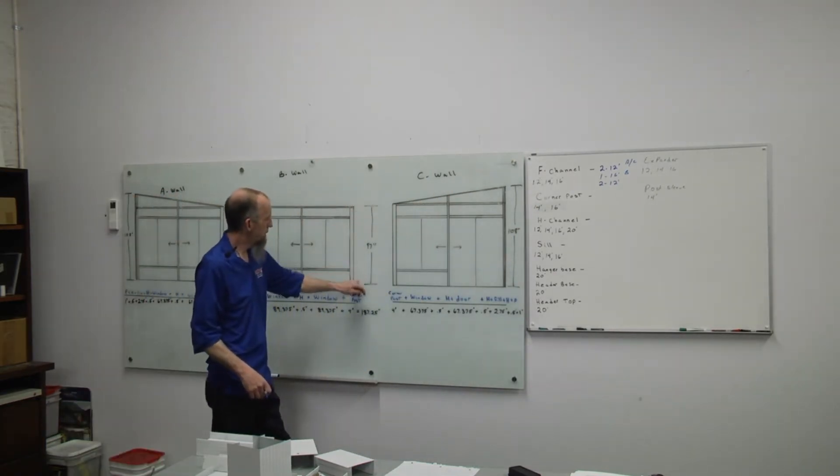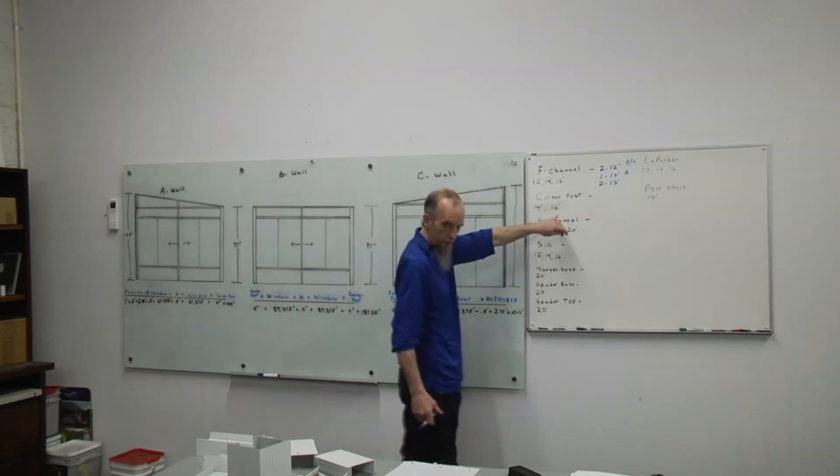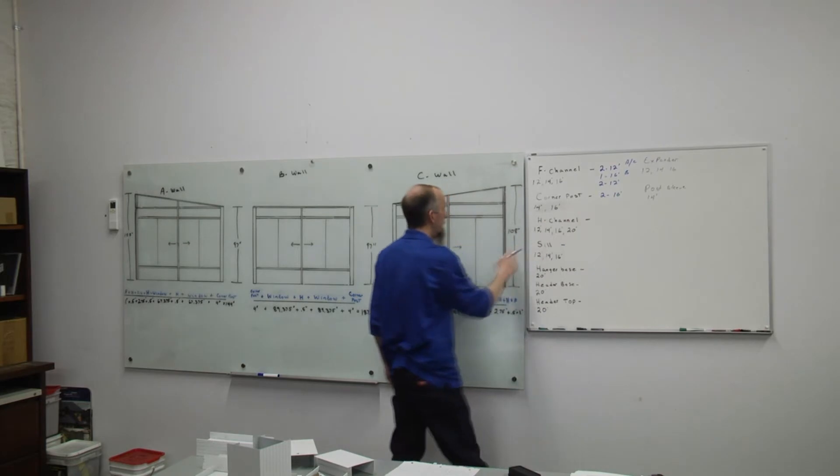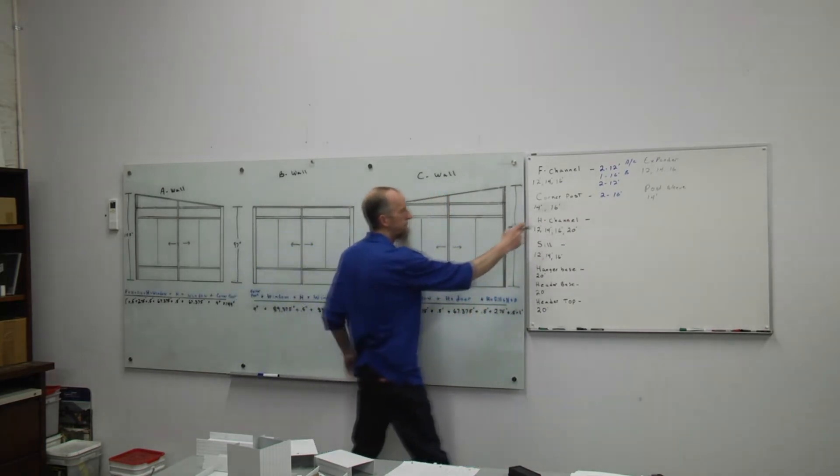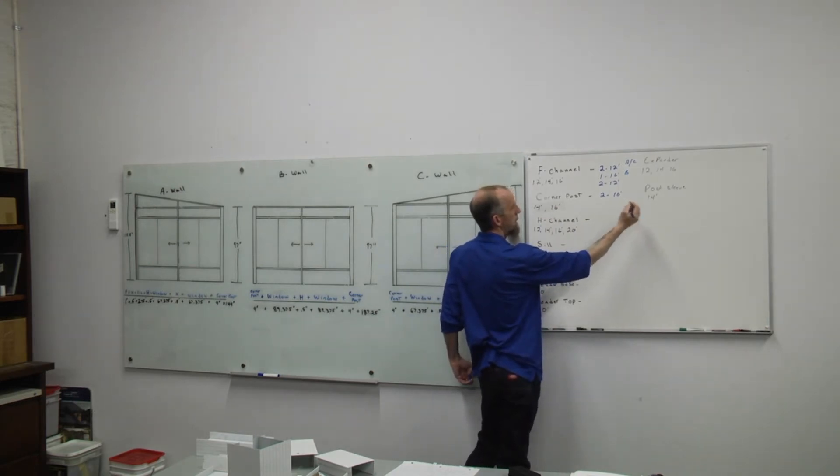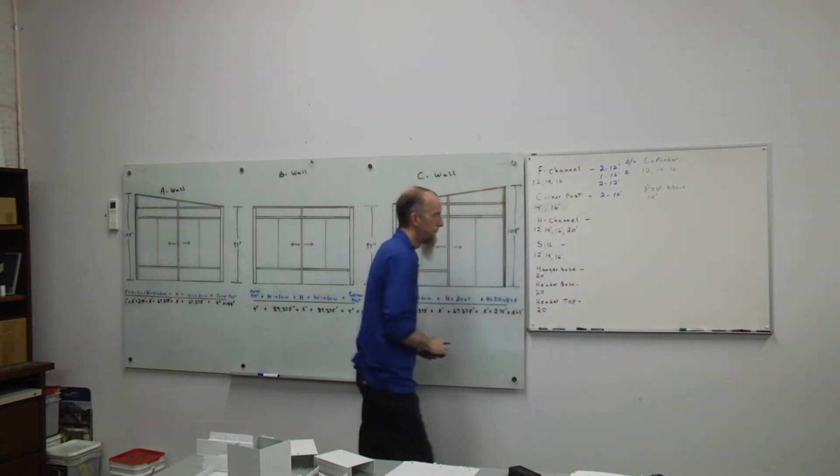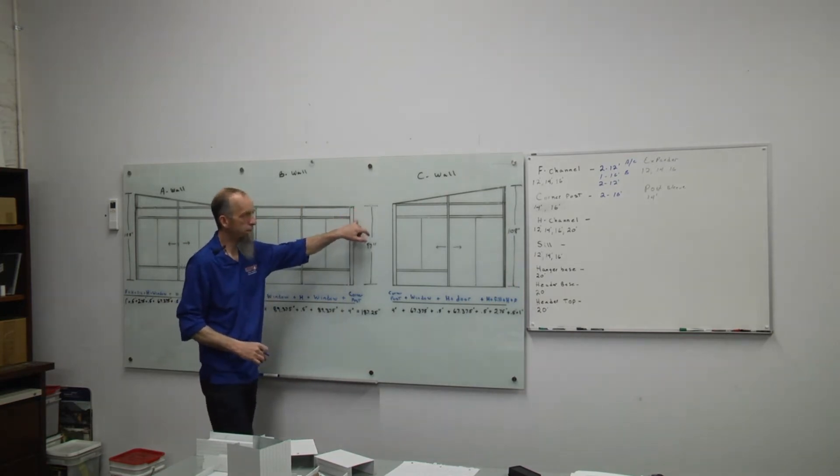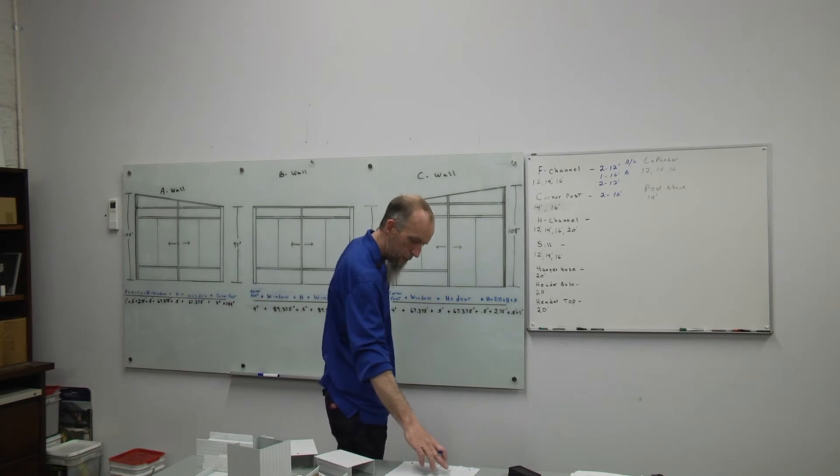Next would be our corner post. We need 97 inches. We'll use two 16 foot corner posts. We'll cut a 97 out of our 16 footer. That'll leave us a scrap, leftover piece that we can use in a standard 7 foot tall wall.